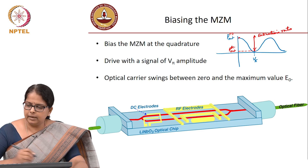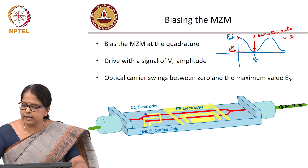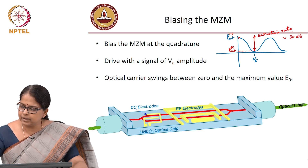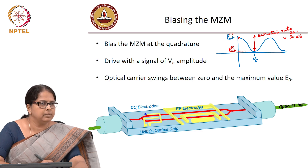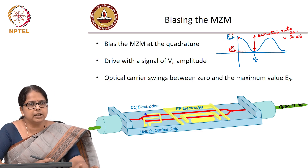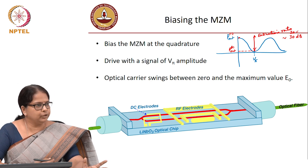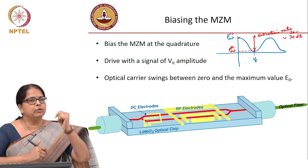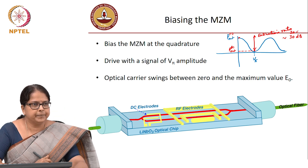Then P_out corresponding to high divided by P_out corresponding to low gives you the extinction ratio. Typically, commercial modulators come with an extinction ratio of anywhere between 20 to 30 dB. Higher the extinction ratio, the better for you — the better would be your depth of modulation.